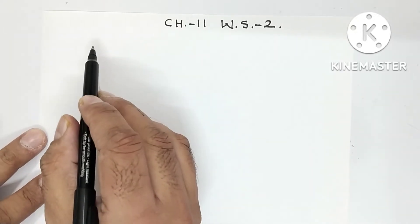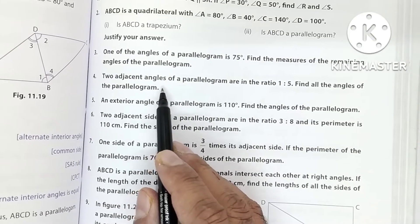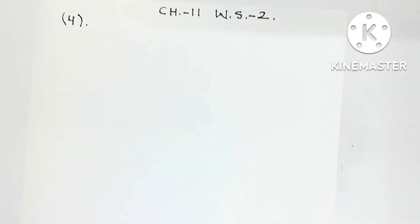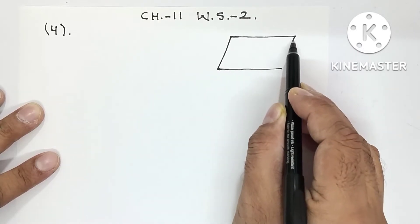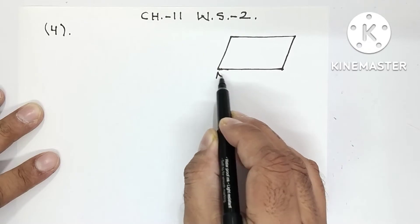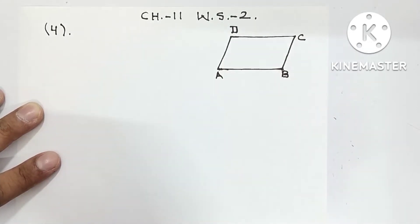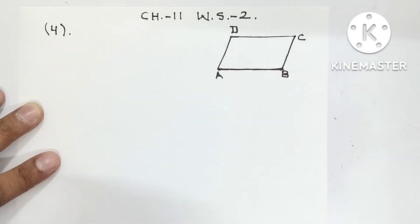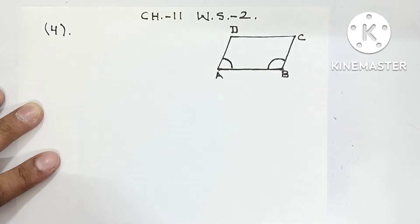Hello everyone. In this video I am going to do question number 4 of worksheet 2, chapter number 11, Understanding Quadrilaterals. The question is: two adjacent angles of a parallelogram are in the ratio 1:5 — find all the angles of the parallelogram. I am going to draw a parallelogram and label it A, B, C, and D. The two adjacent angles are at adjacent vertices.